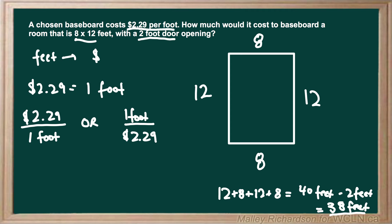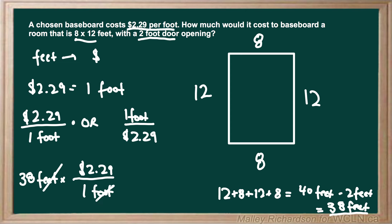Now that we have our total perimeter of 38 feet for the baseboards, we can solve how much this is going to cost. We take 38 feet and write that first, then multiply by the unit conversion with feet on the bottom so we are left with dollars. That means we use $2.29 over 1 foot. We multiply 38 feet by $2.29 over 1 foot — the units cancel out and we're left with 38 times $2.29, which gives us an answer of $87.02.